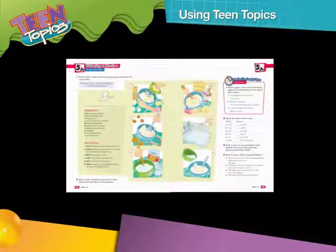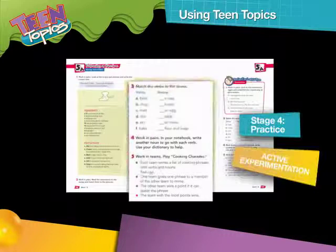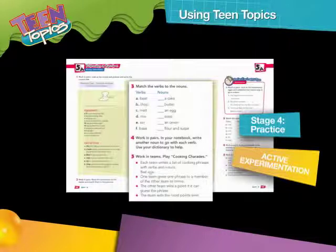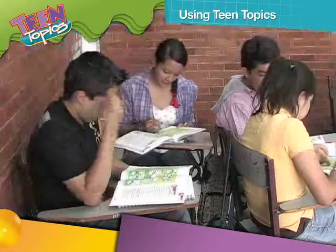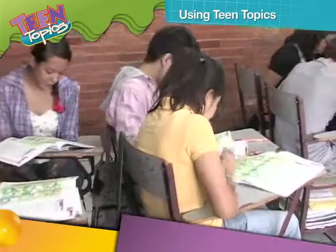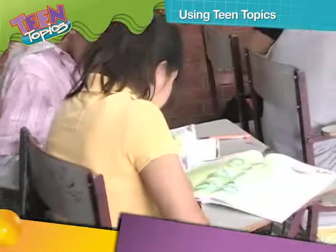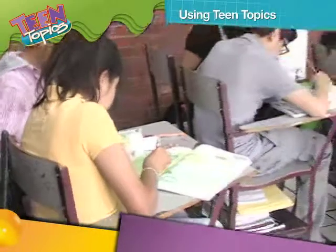The final activities in the lesson are aimed at getting students to practice or experiment with what they have learned. Depending on the language function being learned in the lesson, practice is oral, written, or a mixture of both. Practice exercises also move from controlled to freer activities. In controlled exercises, students' production is limited to individual words or sentences based on a structured model. Freer practice exercises allow students to personalize information and produce texts rather than words or phrases.